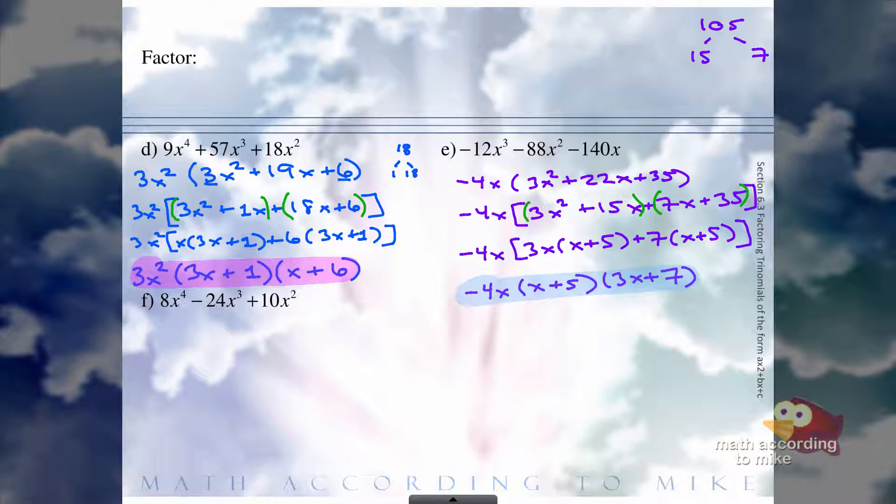All right, I would ask you again to pause the video, try to do part F on your own, and then hit play. See how you did. So the GCF of 8X to the fourth minus 24X cubed plus 10X squared would be 2X squared. If you pulled out a 2X squared, you would be left with 4X squared minus 12X plus 5.